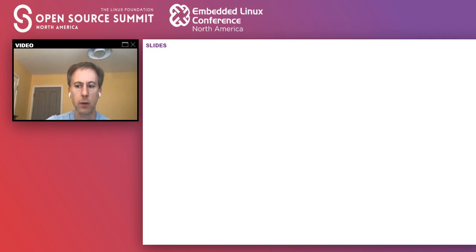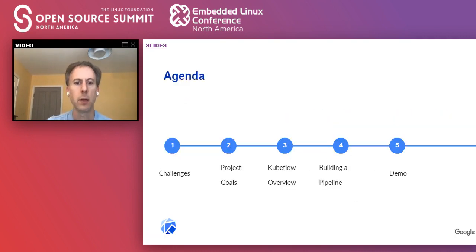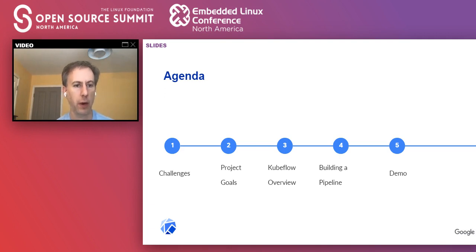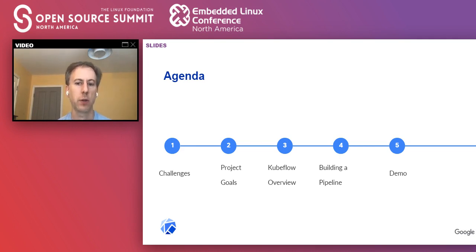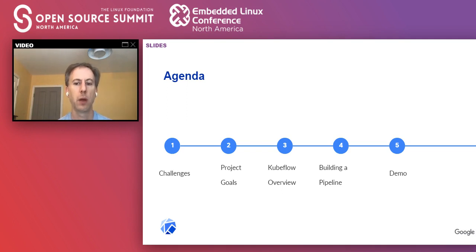Let's start with the agenda. We're going to begin with the 'why' — some of the challenges in building machine learning projects. We'll talk about the Kubeflow platform and specifically the pipeline component, which allows you to build an end-to-end reproducible machine learning pipeline. We'll get into a how-to, so you'll see some code and look at a Dockerfile to get a flavor for what it takes to build a pipeline. And finally, we'll do a demo using screenshots that walks through an actual pipeline in a real deployment.